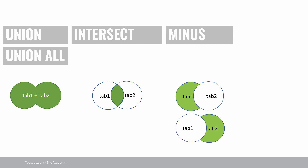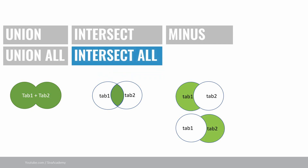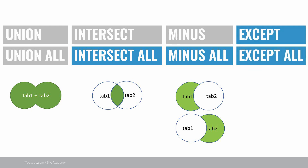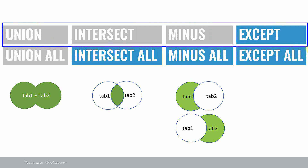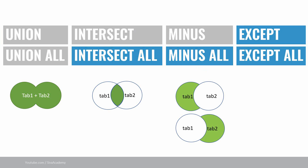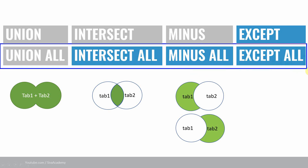These are the four set operators available till the previous version of Oracle. From Oracle 21c, we have a few more set operators introduced: intersect all, minus all, except, and except all. So union, union all, intersect, minus, and except — these five set operators will remove duplicates if any. However, union all, intersect all, minus all, and except all — these four set operators will not remove duplicates and will not sort the data.